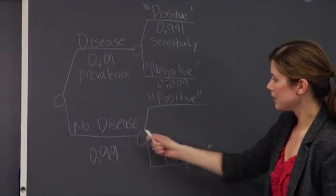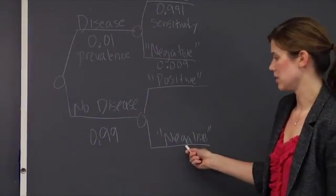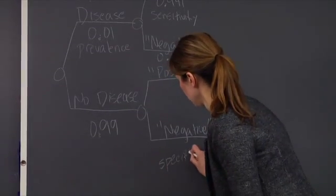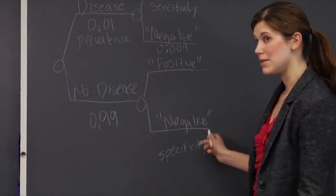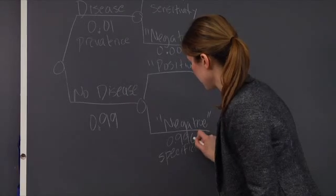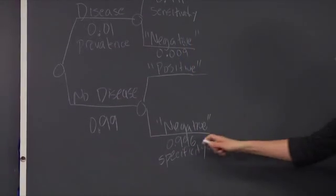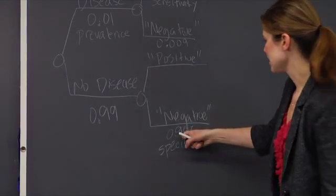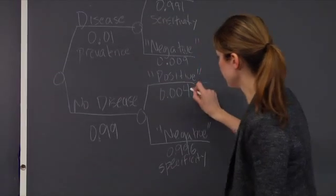Similarly, the probability that a person without the disease has a negative test result is what's known as the specificity. In this example, the specificity of this HIV test is 99.6%, or 0.996. That means the probability that a patient has a positive test is 1 minus this, or 0.004.